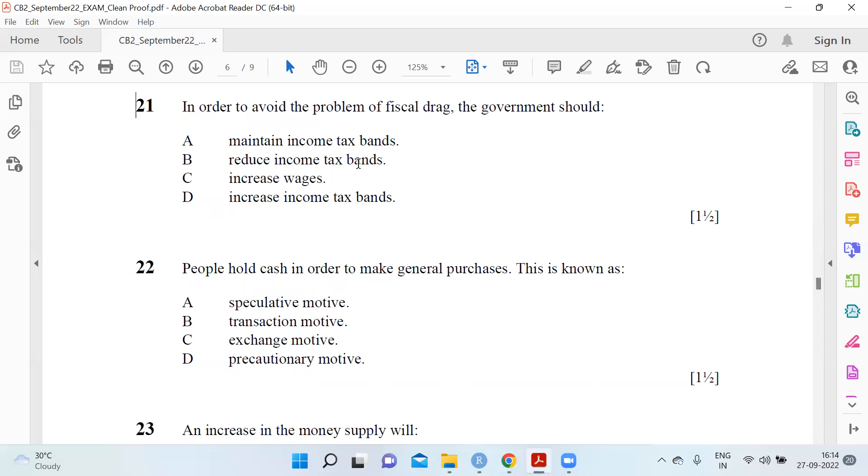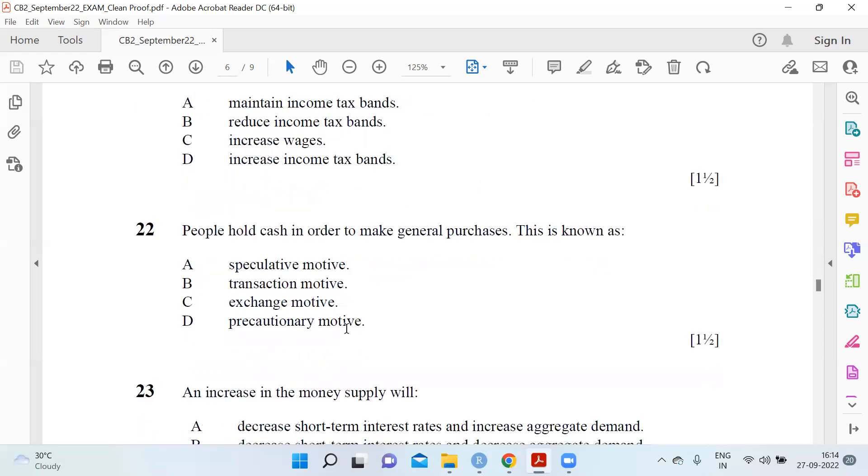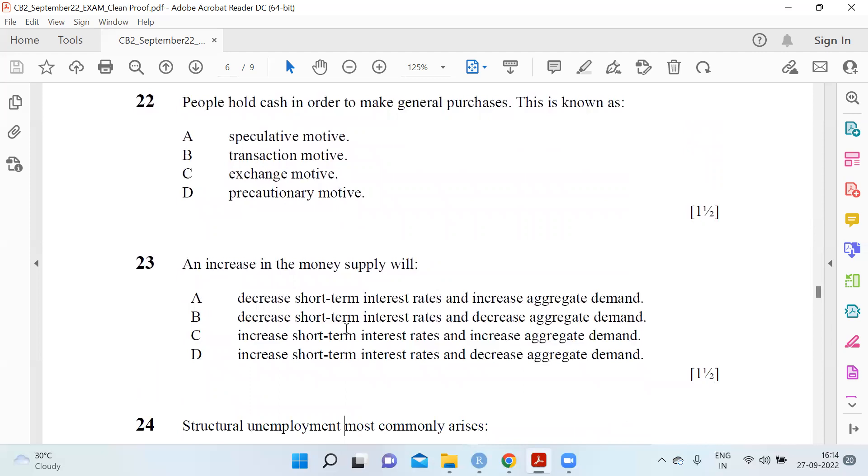People hold cash in order to make general purchases - this is known as the transaction motive. An increase in the money supply will decrease the short-term interest rates and increase aggregate demand. That's 23 A.